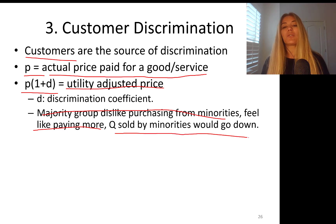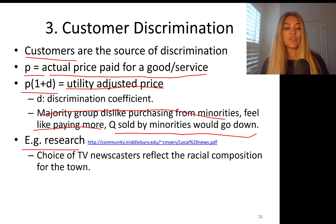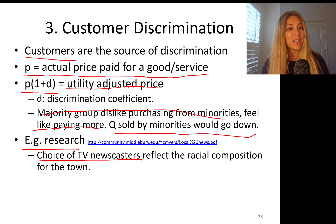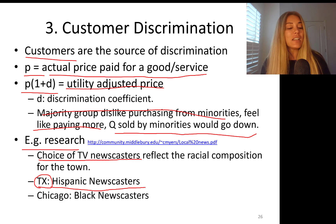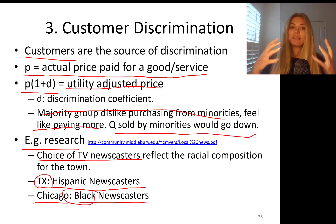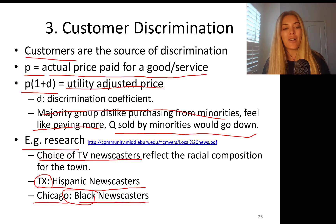So the quantity sold by minorities would go down. Research by Dr. Myers shows that the choice of TV newscasters reflects the racial composition of the town. In Texas, for instance, where there is a high Mexican-American population, you will see many more Hispanic newscasters. In Chicago, you will see many more Black newscasters. So your customers' racial and ethnic composition can actually have an impact on the workers' racial and ethnic composition.